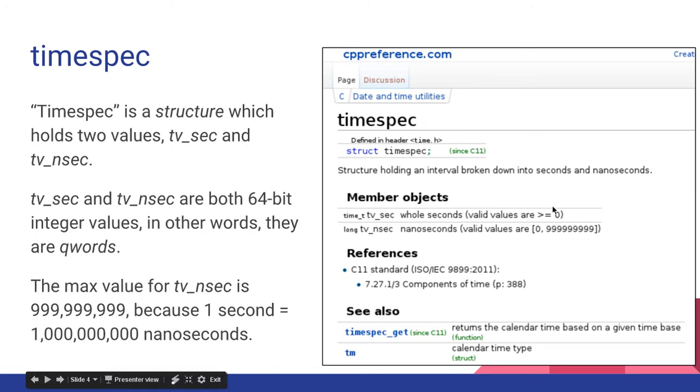So your seconds could be anything greater than zero, but your nanos are greater than or equal to zero, and your nanoseconds have to be between zero and 999 million nanoseconds.